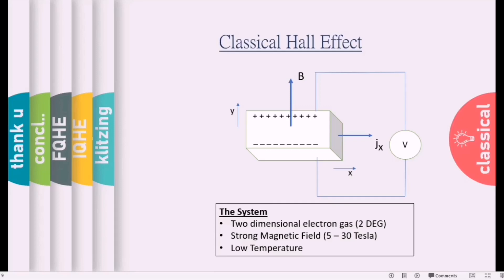So this is two-dimensional electron gas, written as 2DEG in short. A strong magnetic field is applied perpendicular to the sample, it is coming out of the plane, and the magnetic field is of the order 5 to 30 Tesla. And experiments are conducted at a low temperature so that the quantum effect will be important and visible in this system.